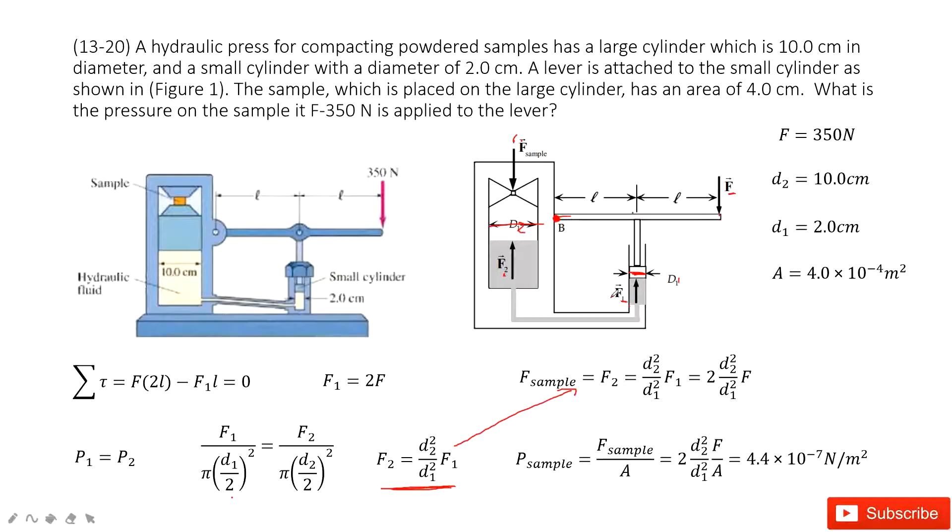Now we need to find the pressure for this sample. That is, use the force of the sample divided by A. A is given as 4.0 times 10^-3 m^2. So in this case, we input F sample inside.